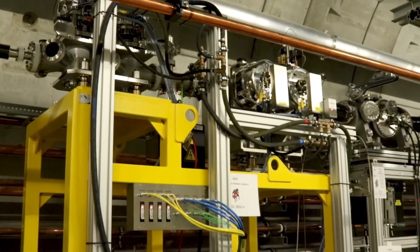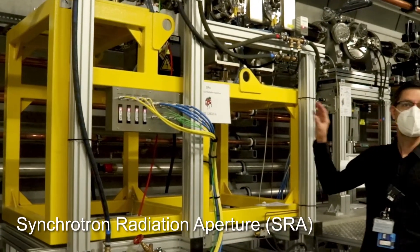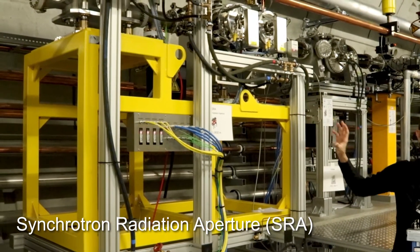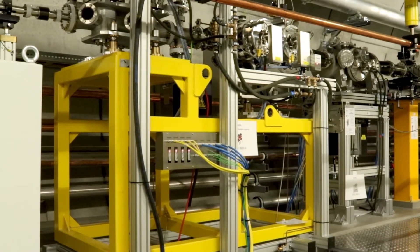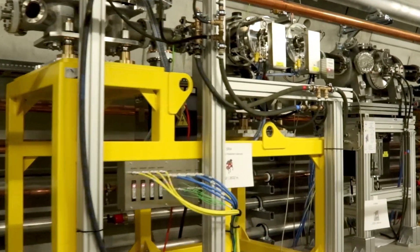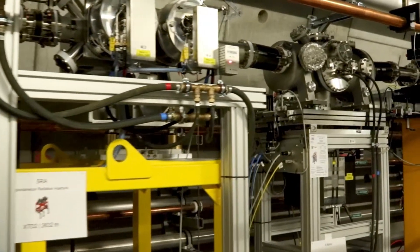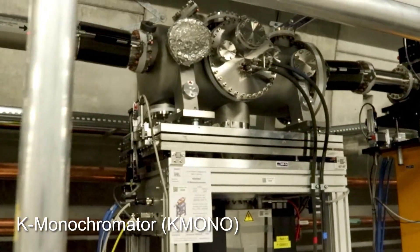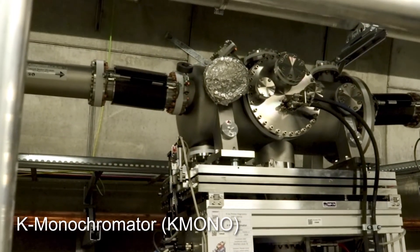Now we are at the spontaneous radiation aperture, SRA. These are slits in X and Y direction. Just after them, we have a monochromator, which is called K-monochromator, and is used for undulator commissioning and optimization.